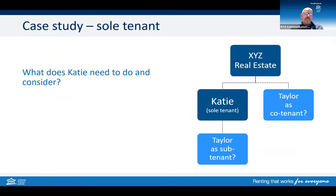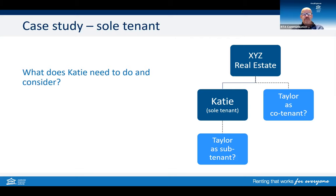Firstly, Katie must seek permission in writing. The Residential Tenancies and Rooming Accommodation Act says that a tenant can transfer all or part of their interest under the agreement, or sublet, only if the lessor agrees in writing to the transfer or sublet. It also says that the lessor must act reasonably in failing to agree to the request. So if Katie is one person in a two-bedroom apartment and requests an additional tenant, it might be unreasonable not to allow it. If the tenant feels the lessor is being unreasonable, they can come to the RTA for dispute resolution.